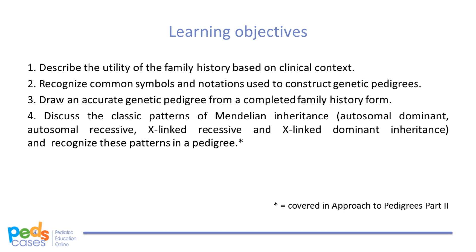By the end of part one, you should be able to describe the utility of the family history pedigree based on clinical context, recognize common symbols and notations used to construct genetic pedigrees, and draw an accurate genetic pedigree from a completed family history form. By the end of part two, you should be able to discuss the classic patterns of Mendelian inheritance — autosomal dominant, autosomal recessive, X-linked recessive, and X-linked dominant inheritance — and recognize these patterns in a pedigree.